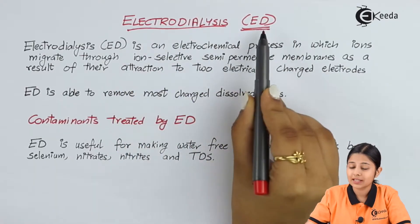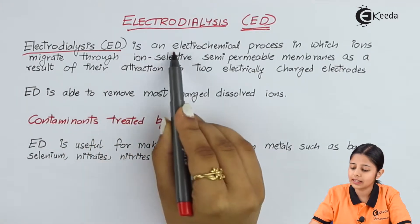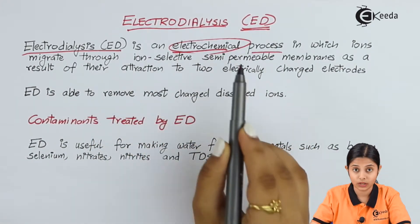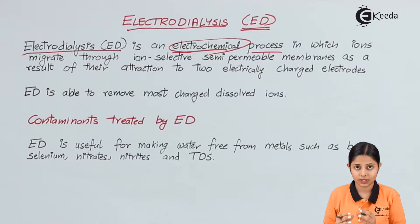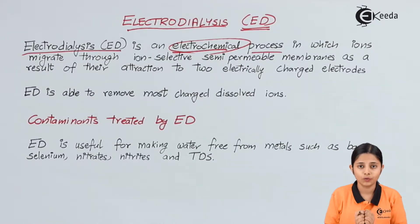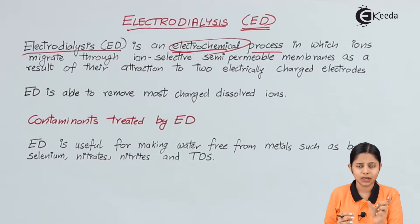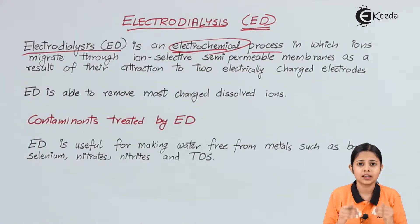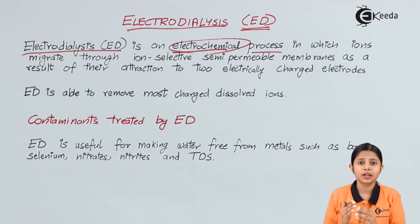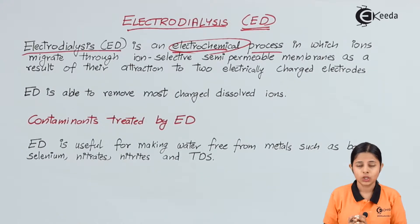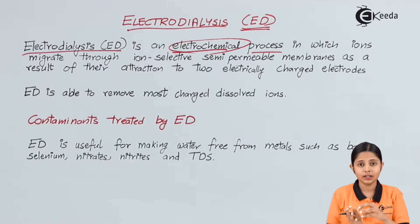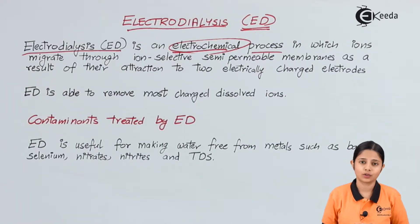Electrodialysis is also denoted as ED. Electrodialysis is an electrochemical process. Electrochemical processes are those processes where electricity and chemicals both are used together. For example, if there is a chemical reaction happening because of a given electricity or potential difference, that process is known as an electrochemical process. Similarly, if there is a chemical process which produces electricity, that is also known as an electrochemical process.